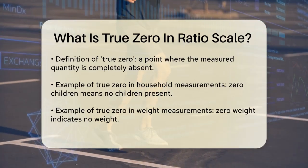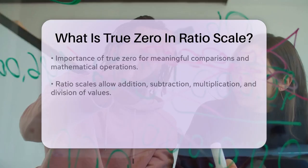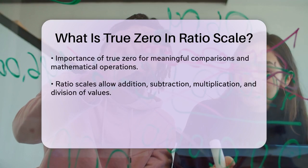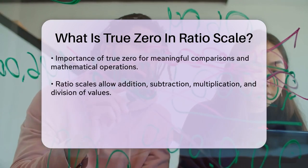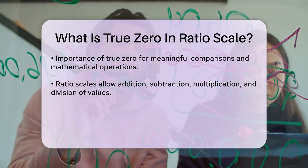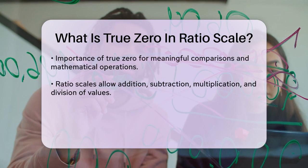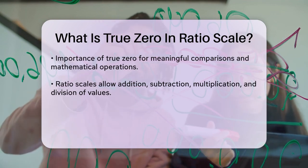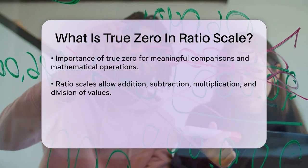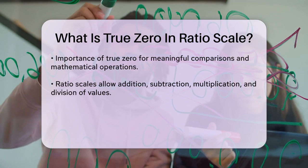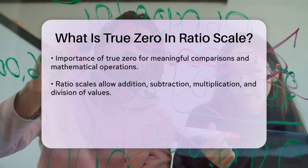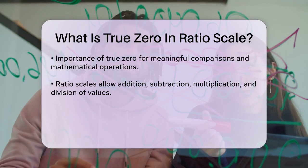To illustrate this, consider temperature scales. While Celsius and Fahrenheit are interval scales, where zero is just another temperature value, the Kelvin scale is a ratio scale. In Kelvin, zero K represents absolute zero, meaning there is no thermal energy at all. This allows you to say that 40 K is twice as hot as 20 K, which is not possible with Celsius or Fahrenheit.